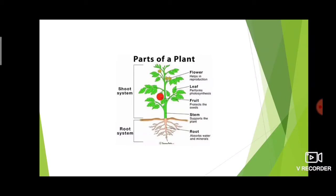The next part is leaf. What is the use of leaf? It performs photosynthesis — from sunlight, it performs photosynthesis. Then fruit: the use of fruit is to protect the seed.